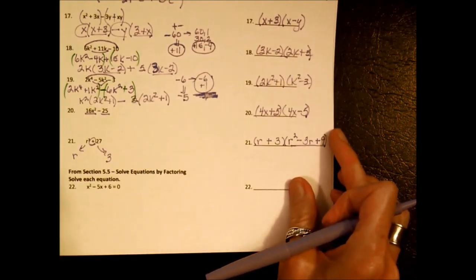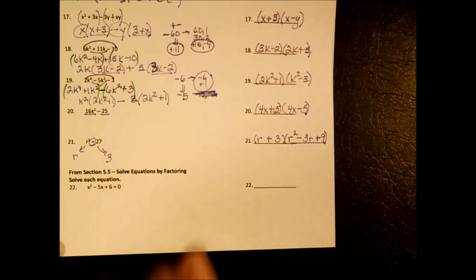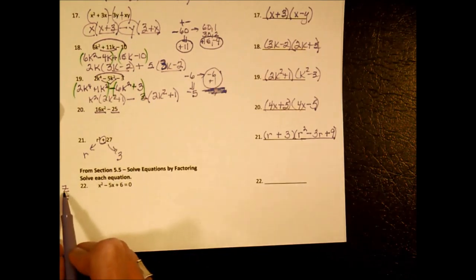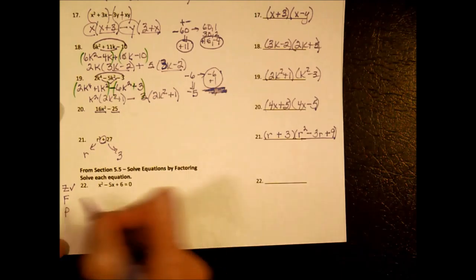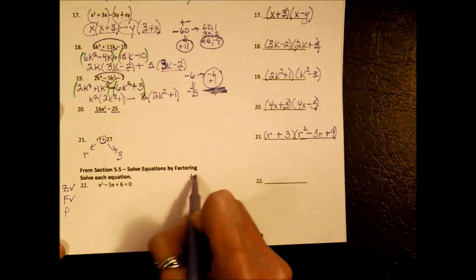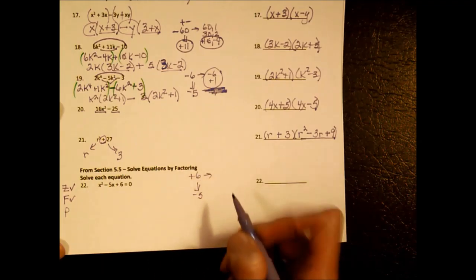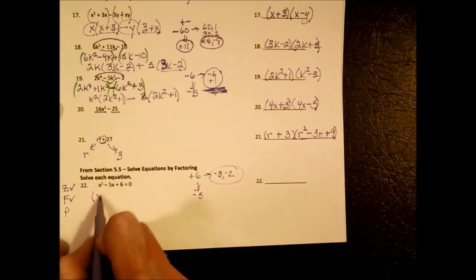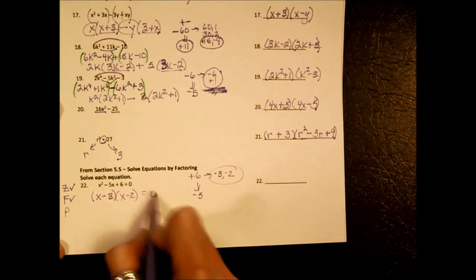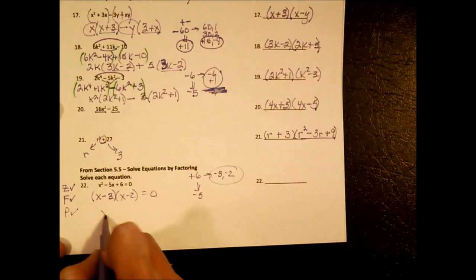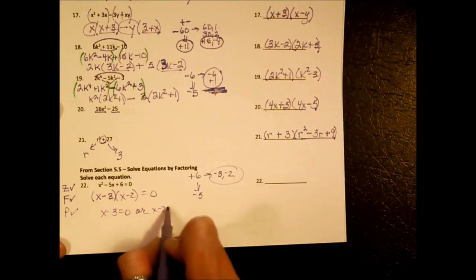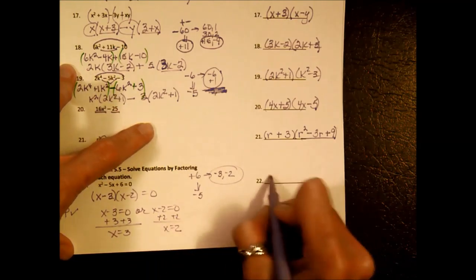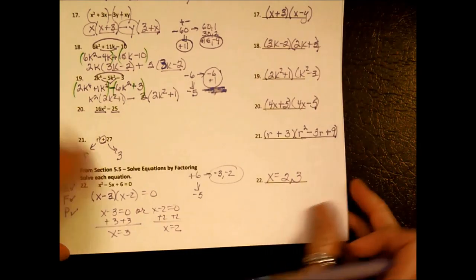Now we use factoring to solve equations using the zero factor property. First, we want the equation equal to zero — it already is. Factor the trinomial: it's a short process, and I need factors of positive 6 that make negative 5. Those are negative 3 and negative 2. The factors are (x minus 3)(x minus 2) equals zero. Setting each factor equal to zero: x equals 3 or x equals 2.